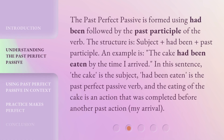The past perfect passive is formed using 'had been' followed by the past participle of the verb. The structure is: subject plus had been plus past participle. An example is: 'The cake had been eaten by the time I arrived.' In this sentence, 'the cake' is the subject, 'had been eaten' is the past perfect passive verb, and the eating of the cake is an action that was completed before another past action — my arrival.